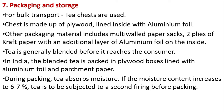Packaging and storage: for bulk transport, tea chests are used, made of plywood lined inside with aluminum foil. Other packaging materials include multi-walled paper sacks with two layers of kraft paper and an additional layer of aluminum foil inside. Tea is generally blended before it reaches the consumer. In India, blended tea is packed in plywood boxes lined with aluminum foil and parchment paper. During packing, tea absorbs moisture; if moisture content increases to 6–7%, tea must be subjected to a second firing before packaging.